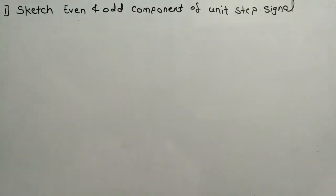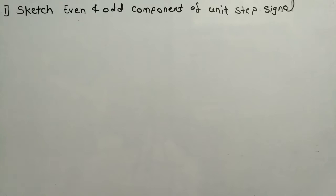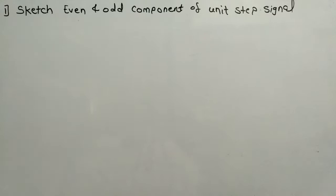Hello and welcome to Electronic Solutions. In today's video we will discuss how to sketch the even and odd components of a unit step signal, and I will also cover one more example of a discrete-time signal for the same. In my previous videos I have already explained the conditions for even and odd and the formulas for calculating even and odd components, and I have also discussed all the basic signals. The links to both videos will be provided in the description box. Let us start solving this problem.